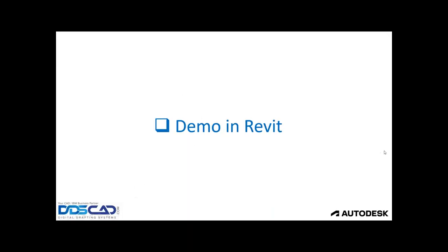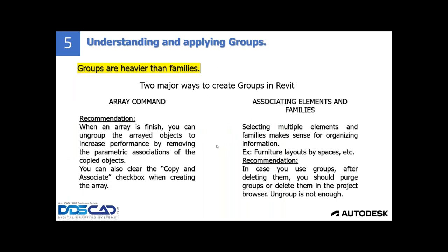Lastly, the fifth point is understanding and applying groups. Groups are heavier than families. In architectural design, many people have the tendency to group a lot of things, especially layouts, and that actually creates a lot of bad performance in Revit. If you want to scale up your modeling muscles in Revit, keep in mind that groups are very heavy and difficult to control. There are two ways to create groups: one is using the array command with the 'associated' checkbox, and the other is selecting multiple elements and grouping them.